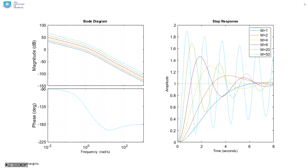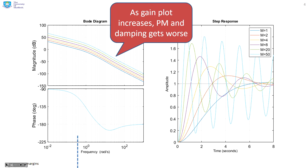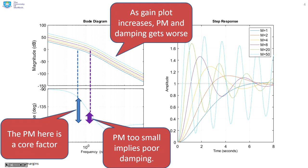Here we're going to focus mainly on the phase margin. As the gain plot increases, the phase margin — shown here with these double-sided arrows — gets worse. And as the phase margin gets smaller, you get lower and lower damping and more and more oscillation. Generally speaking, you want the phase margin to be around 60 degrees, and then you're likely to get behaviour with an acceptable damping.